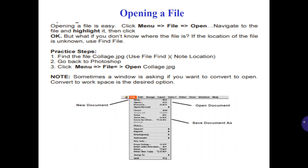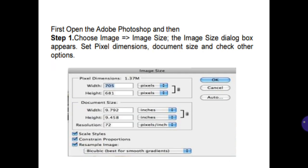You can see this on the picture. There is a new document, open document, and save document as. First, open Adobe Photoshop. Step 1: choose Image and then Image Size. The Image Size dialog box appears. Set Pixel Dimensions and the Document Size and check the other options. This is the Change Image Size section.